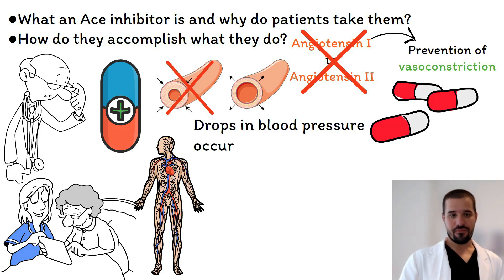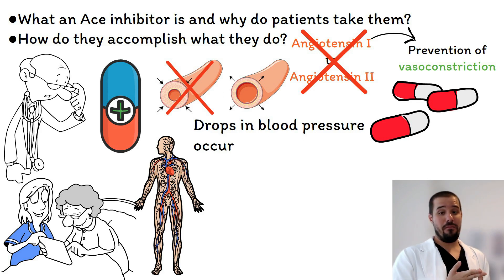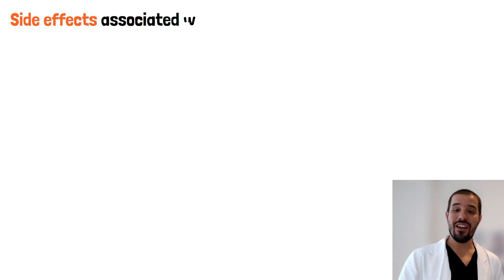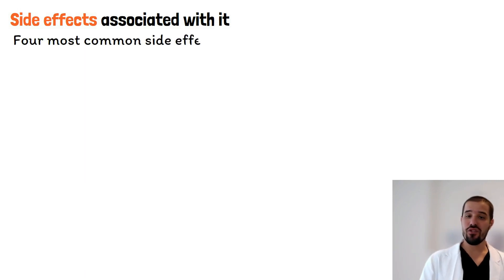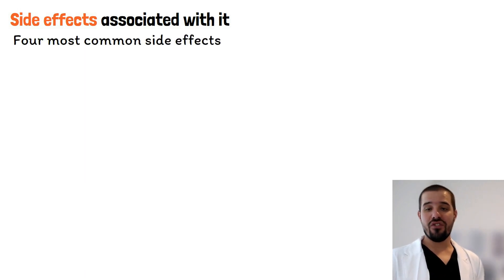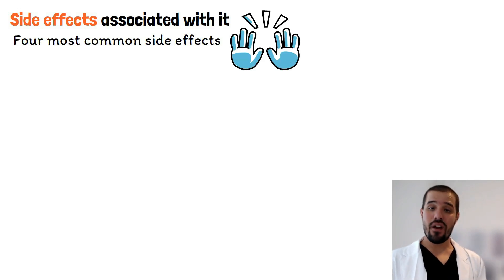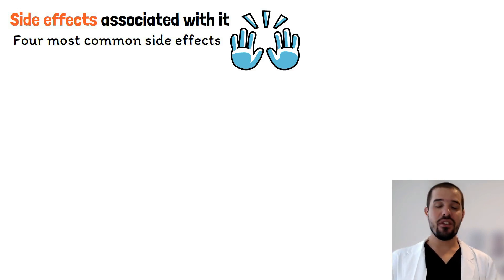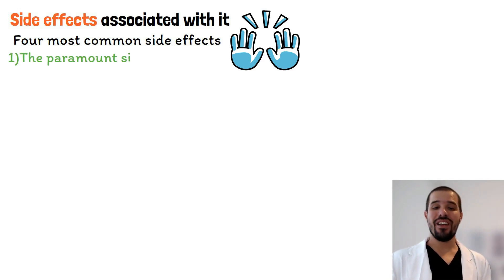As nursing students, we understand that when vasodilation occurs, drops in blood pressure occur, which is one of the objectives of this medication. Now let's explore the side effects associated with ACE inhibitors. These are the four most common side effects you're going to see on your NCLEX, and I have a mnemonic to assist in memorizing these along with what as a nurse we are going to do to monitor for them.